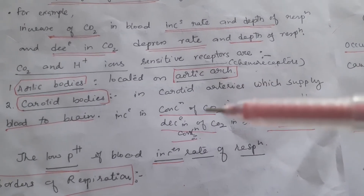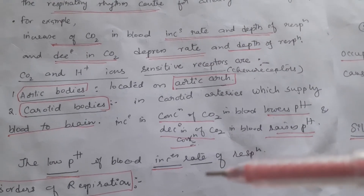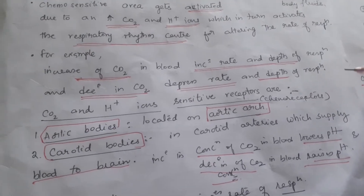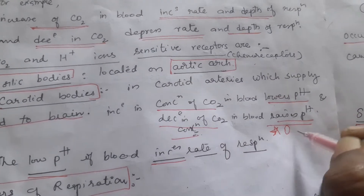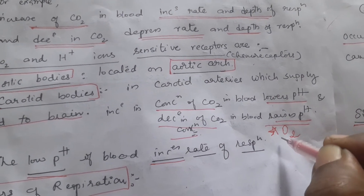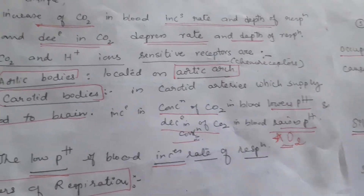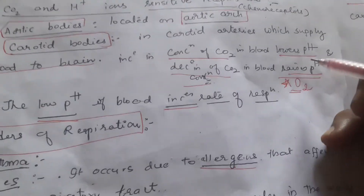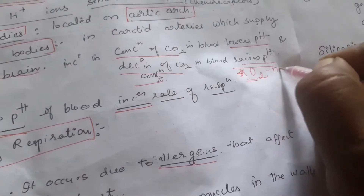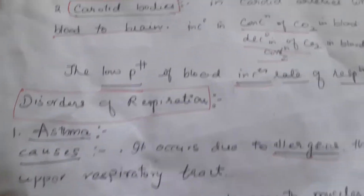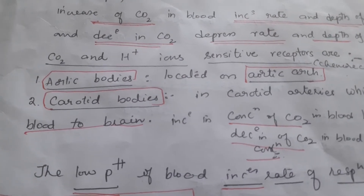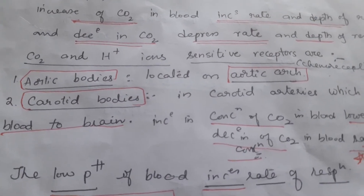The low pH of blood increases the rate of respiration — that means whenever CO2 concentration becomes more, it increases the rate of respiration. A very important point for NEET or competitive exams: O2 has no role to play in regulating the rate of respiration. That is about the regulation of the rate of respiration.